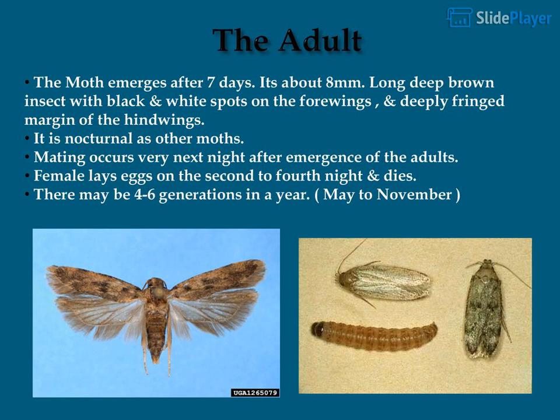The moth emerges after 7 days. It is about 8 millimeters long — a deep brown insect with black and white spots on the fore wings and deeply fringed margins on the hind wings. It is nocturnal. Mating occurs the very next night after emergence, and the female lays eggs on the second to fourth night, then dies.